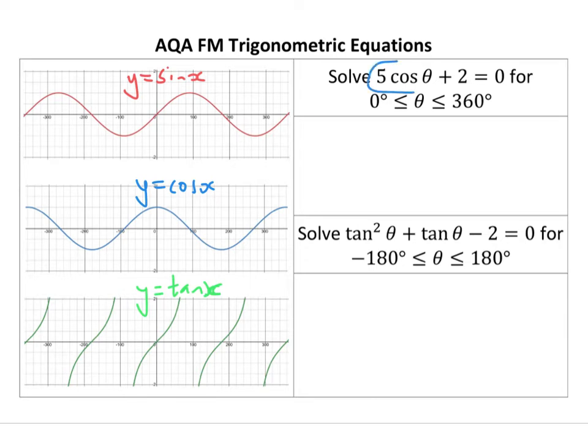So when I rearrange this, your calculator will give you one solution. I'm going to rearrange this to make cosine the subject, and I get minus two-fifths. Therefore, theta is inverse cosine of minus two-fifths, which, when you stick it in your calculator, gives you 113.6.